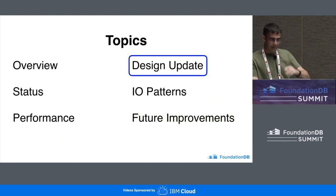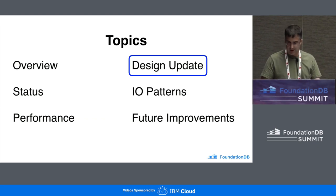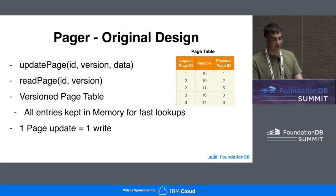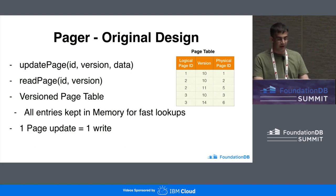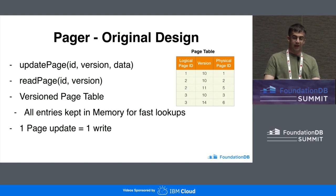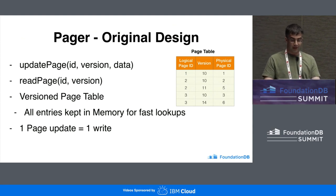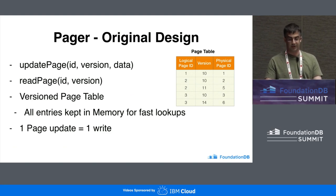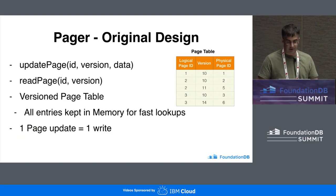Moving on, I'd like to talk in detail about a design update made in the past year based on experience going down the path laid out in the last presentation. A quick review of the pager design: the idea is you can read or update a page at a version, and the pager would keep a page table that maps logical pages at a version to some physical page that contains the actual data. This table will be kept entirely in memory so that lookups are fast, and it must be periodically snapshotted or persisted to disk and recovered on startup.